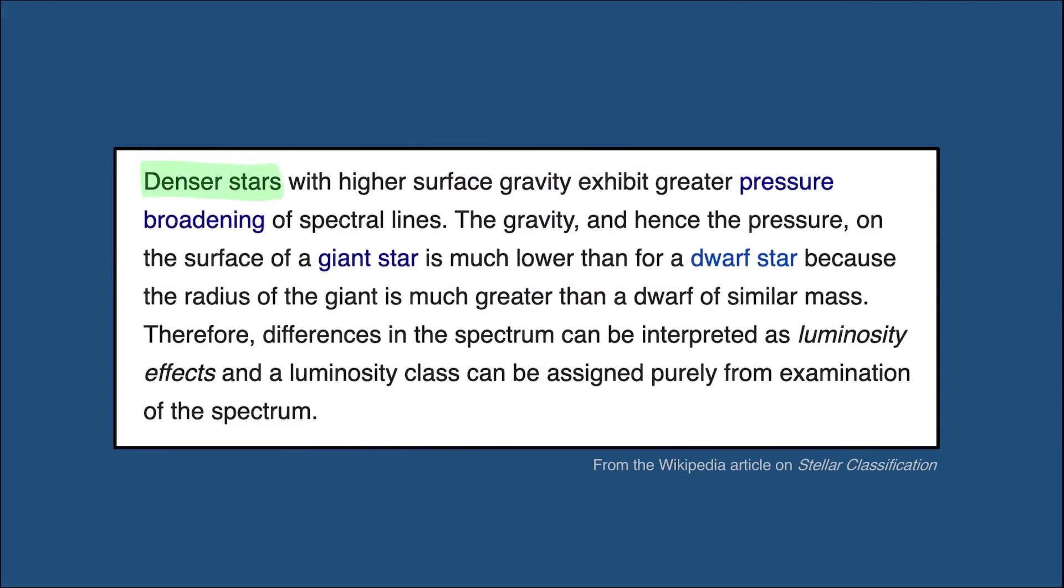Denser stars have a higher surface gravity, resulting in greater pressure broadening of spectral lines. So the spectral lines that you would normally see from various elements appear wider now coming from these stars. Here's why.